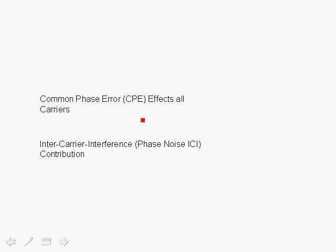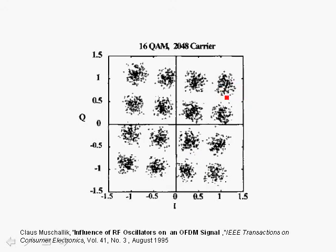It's very important to emphasize that this common phase error term due to the oscillator phase noise is the same for all the carriers within an OFDM symbol, but from symbol to symbol it could change. The other contribution of the phase noise is the intercarrier interference, or phase noise ICI contribution, which we see in the deviations from the ideal constellation point. The common phase error affects all the carriers — it is just a simple phase shift, but it could change from symbol to symbol while remaining the same within one OFDM symbol.